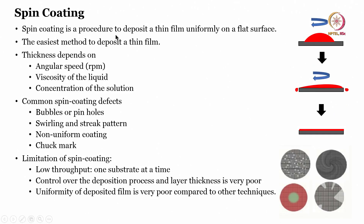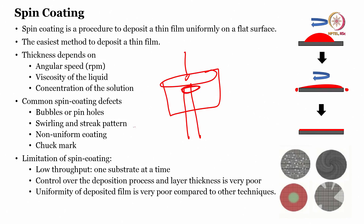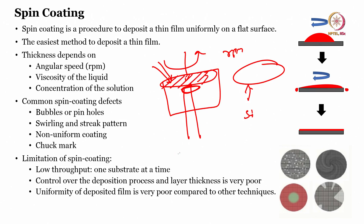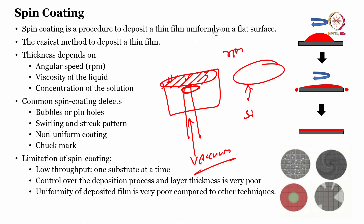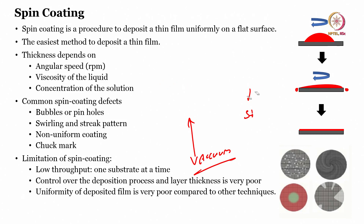Spin coating is a procedure to deposit a thin film uniformly on a flat surface — generally used for photoresist coating. You load the wafer onto a vacuum chuck, spin it at a given RPM, and load the solution. Spinning a silicon substrate at certain RPM yields a thin film. The thickness of this film depends on several factors.